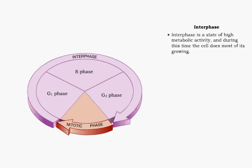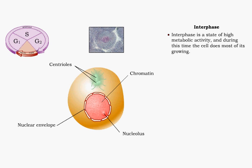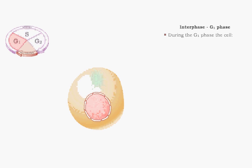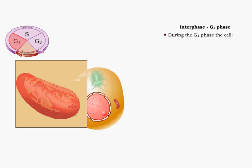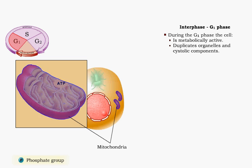Interphase is a state of high metabolic activity in which the cell does most of its growing. Interphase consists of three phases: G1, S, and G2. During the G1 phase of interphase, the cell is metabolically active. It is during this phase that the cell duplicates most of its organelles and cytosolic components, but not its DNA.